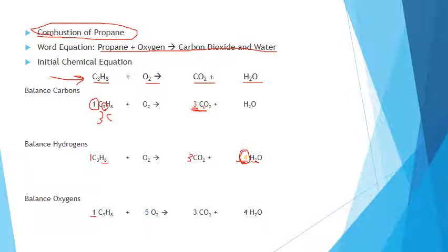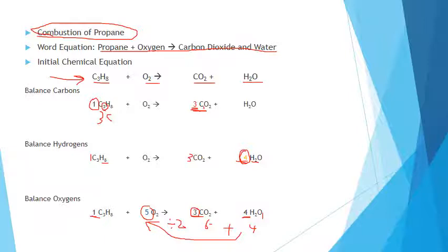You have your alkane balanced, your CO2 balanced, and your water balanced. Now balance the oxygen: three times two is six, plus four times one is four. Add them and divide by two, and you get five. Put that coefficient in front of O2. That'll work for alkanes.